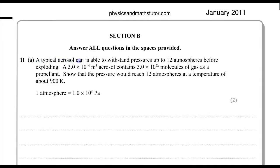A typical aerosol can is able to withstand pressures up to 12 atmospheres before exploding. A 3.0 times 10 to the minus 4 meter cubed aerosol contains 3 times 10 to the 22 molecules of gas as a propellant. Show that the pressure would reach 12 atmospheres at a temperature of about 900 K. We are also given that 1 atmosphere is 1 times 10 to the 5 pascals.